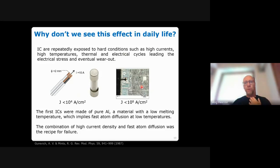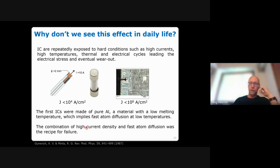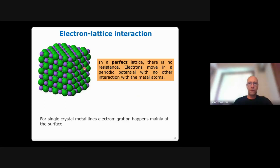Electromigration scales with the melting point of the material — it's easier in aluminum, which was used for early interconnects, than in copper. The terribly bad combination in the first integrated circuits was high current densities combined with fast atom diffusion in aluminum. In a perfect lattice, the solution for the electron wave function is a Bloch wave — a stationary solution producing no resistance. A perfect lattice is essentially a superconductor with no scattering.